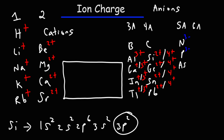Group 6A elements have six valence electrons — like oxygen, sulfur, selenium. They only need two more to reach eight, so once they acquire those two electrons, they will have a 2− charge. Group 7A elements — the halogens — like fluorine, chlorine, bromine, iodine, have seven valence electrons and only need one more to reach eight. So they generate a −1 charge once they gain that one electron to have eight electrons in their outermost energy level.